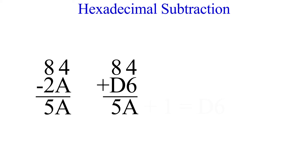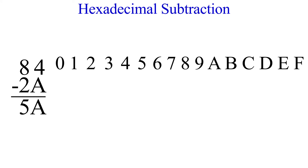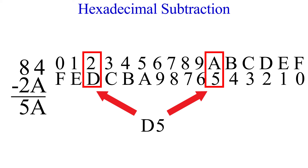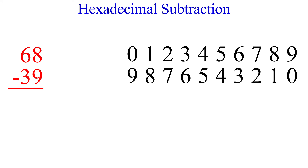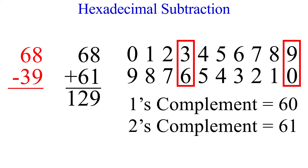Method three writes hex digits in increasing order 0 to F and below that in descending order F to 0. Each top digit is paired with a bottom digit — circling 2 and A on top with their corresponding values gives the one's complement of 2A, and adding one yields the two's complement. This is exactly the same as subtracting FF minus 2A. All three methods are just different ways of achieving the same two's complement addition.